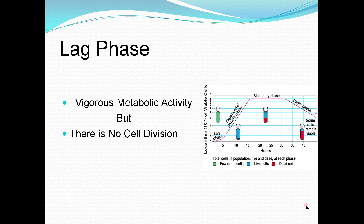In the lag phase, there is vigorous metabolic activity but no cell division. It is the initial phase characterized by cellular activity but no growth. A small group of cells placed in a nutrient-rich medium synthesize their proteins and other molecules necessary for replication. Cell size increases but no cell division takes place. As seen in the growth curve, the lag phase shows metabolic activity with no cell division.